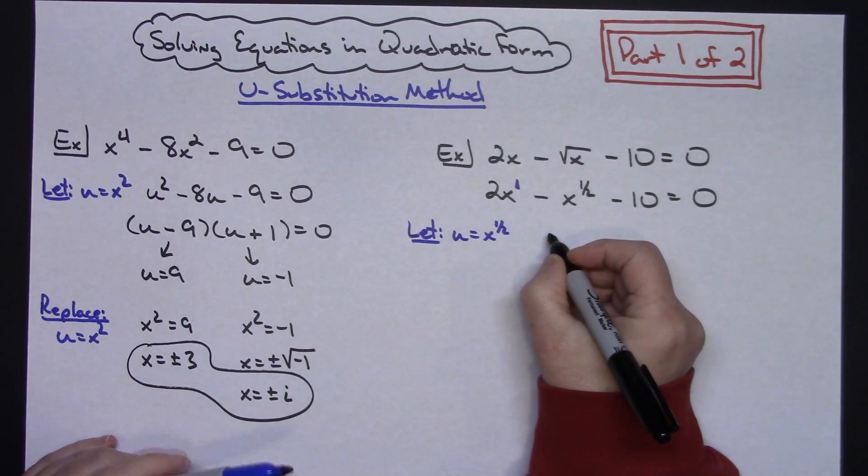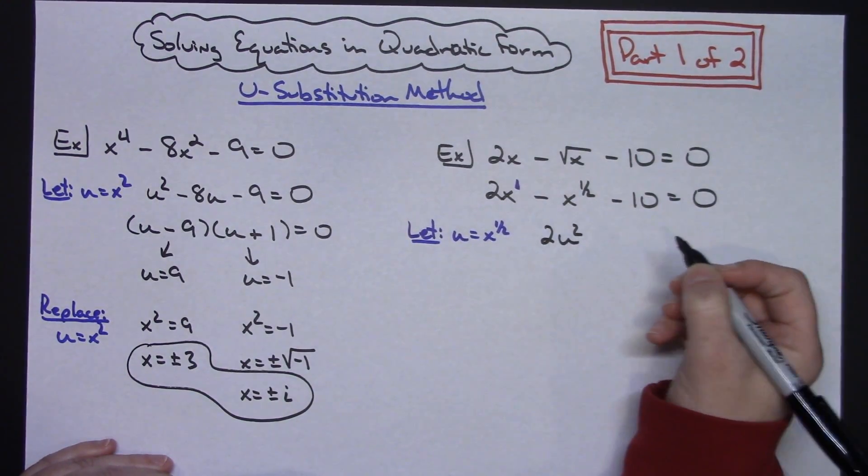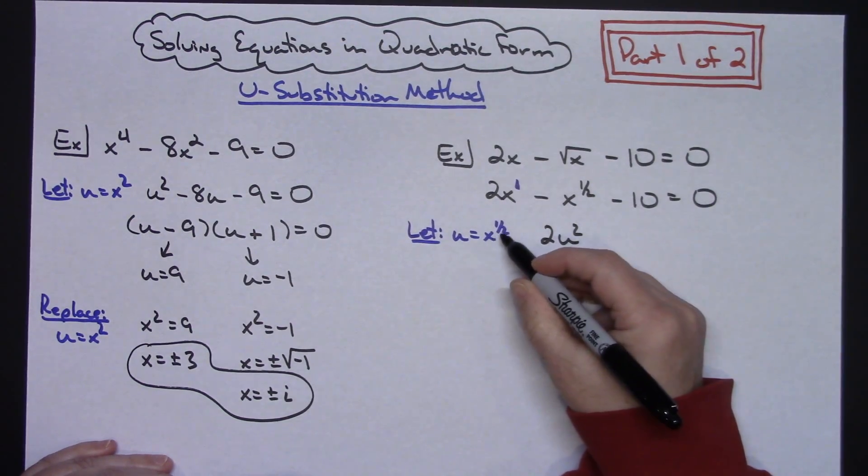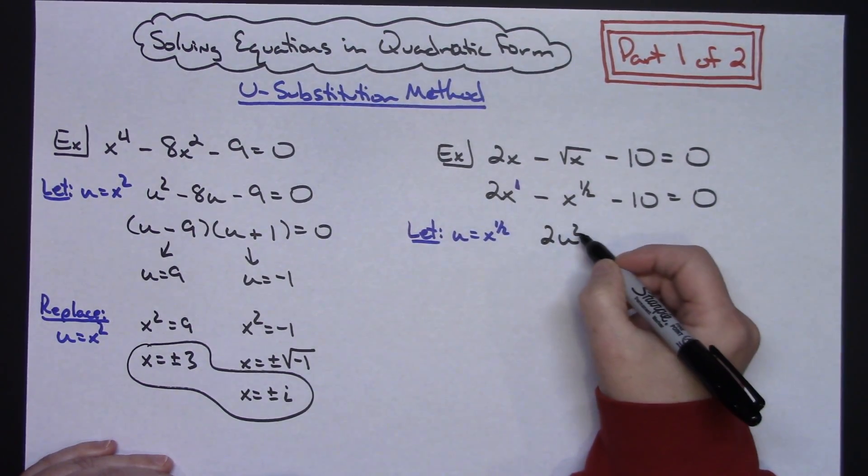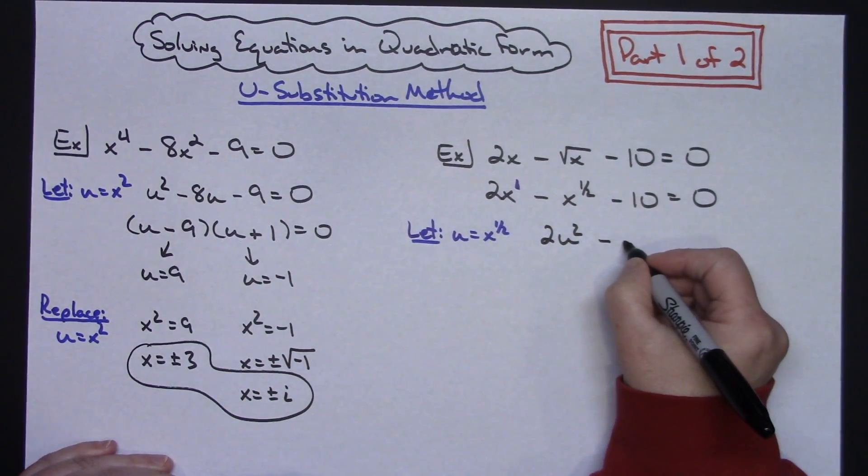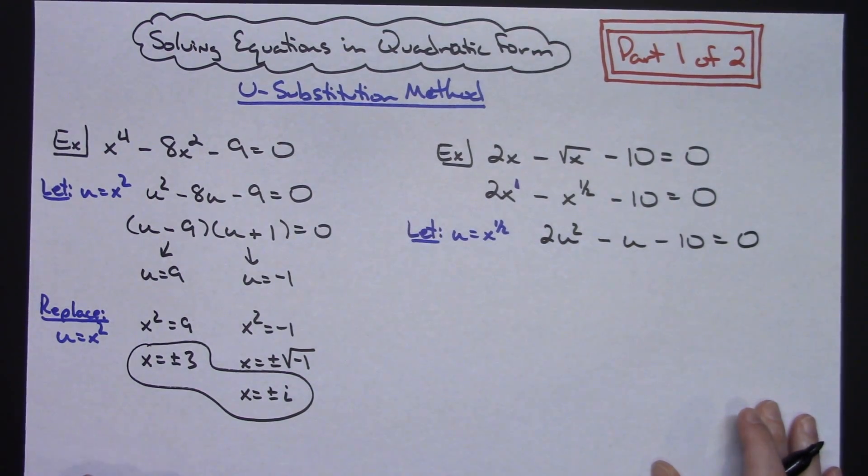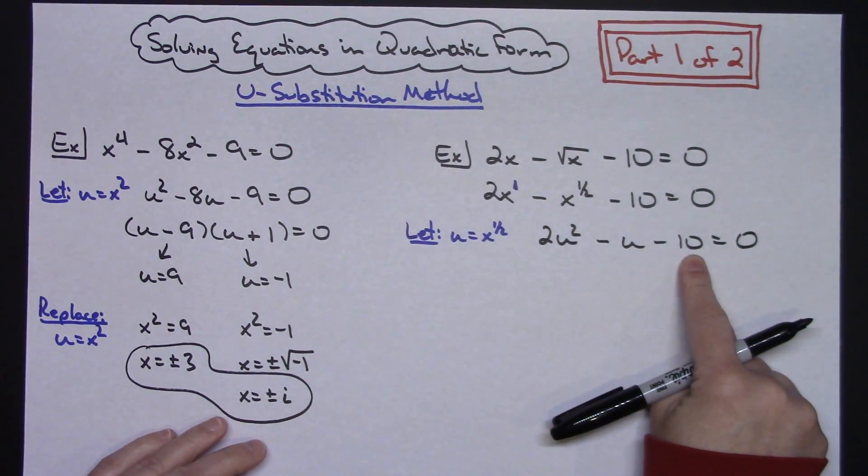Then when I go to rewrite, I am going to have 2u^2, again, because x^(1/2) squared would be an x. And then -u - 10 = 0. Again, a nice quadratic right here now that I can factor.